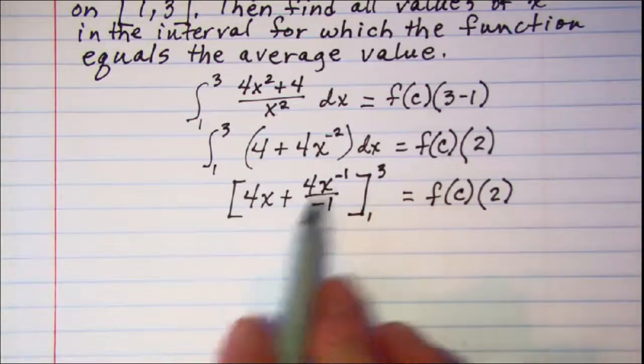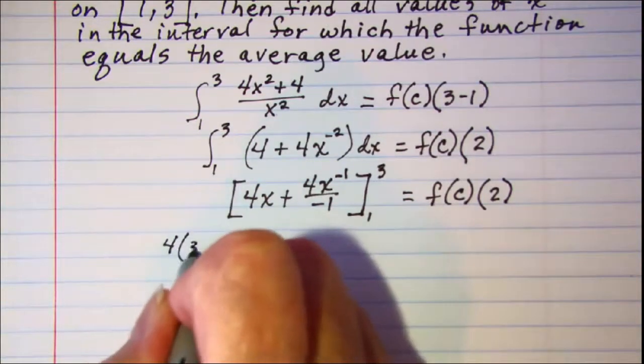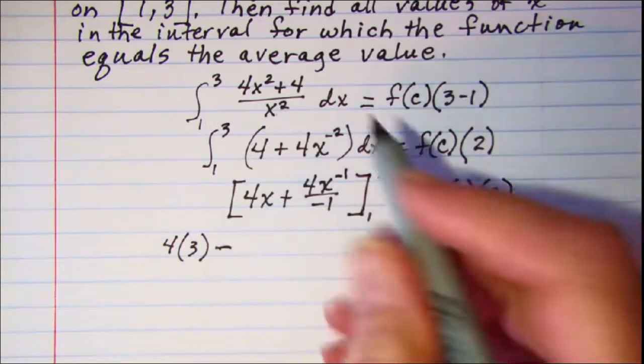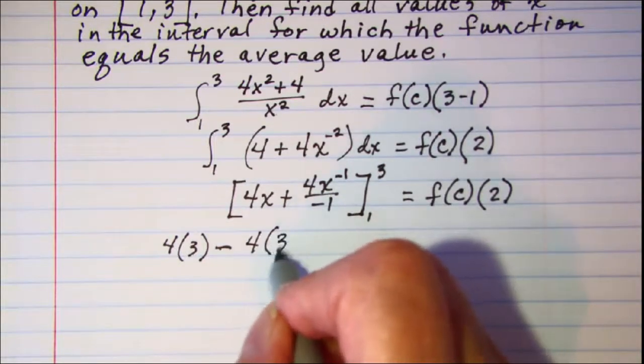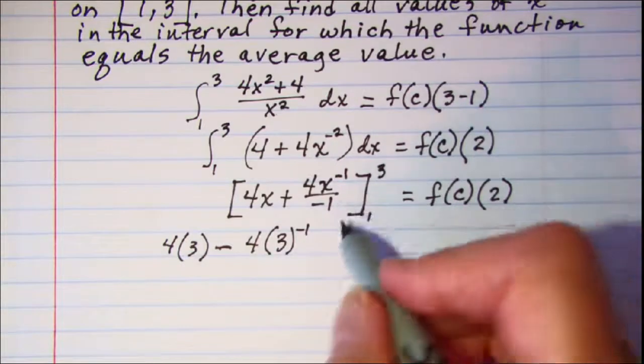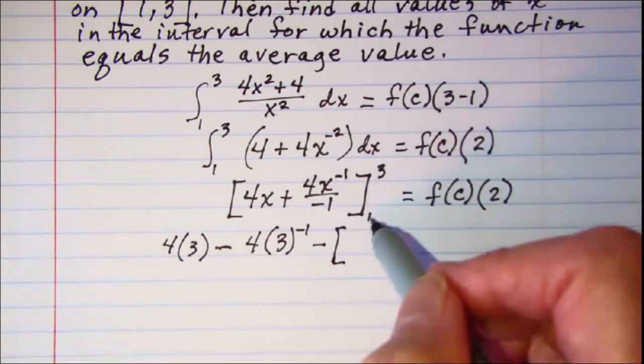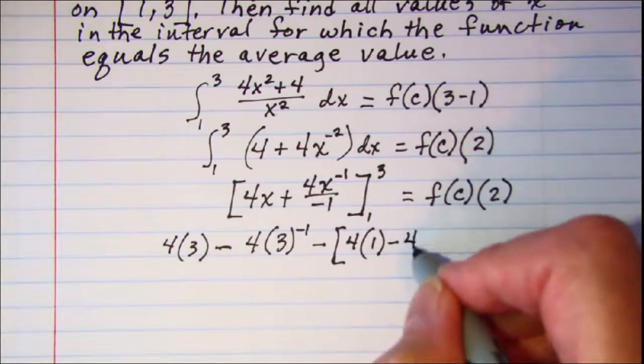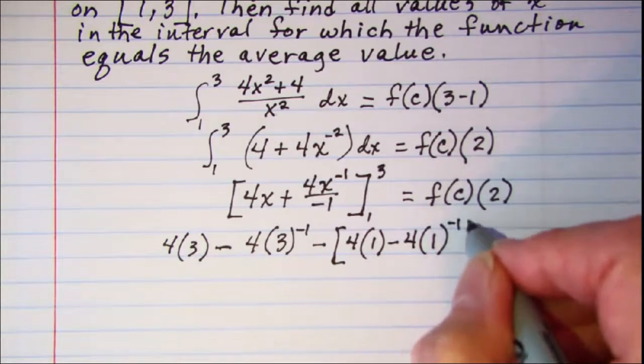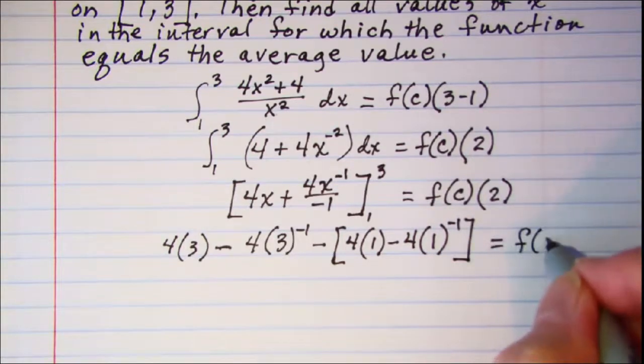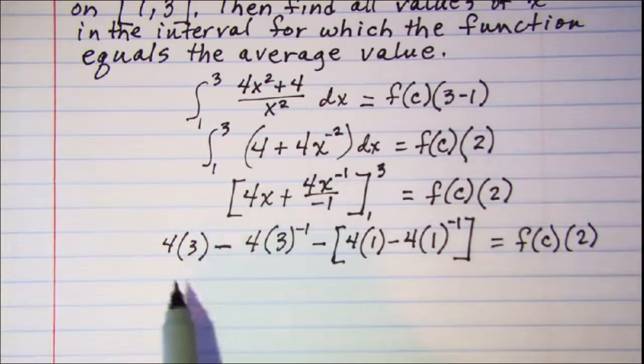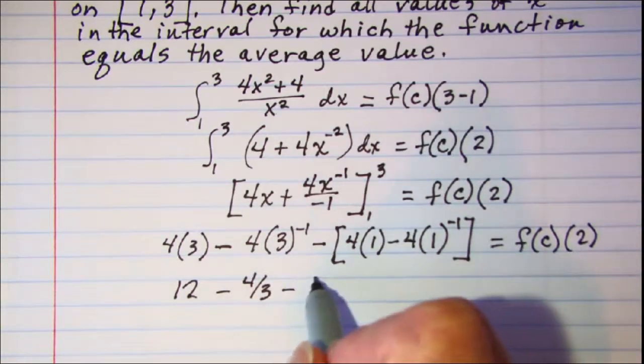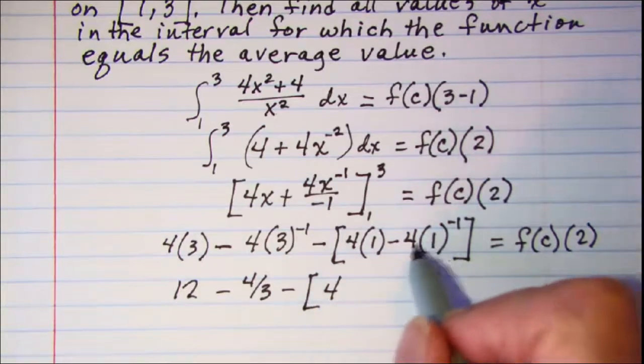First going to sub in the 3 so I have 4 times 3 and this negative 1 in the denominator makes that minus here and then 4 times 3 to the negative 1 and then subtract from that the expression with 1 substituted in. So 4 times 1 and then that's minus 4 times 1 to the negative 1. Copy the right side.